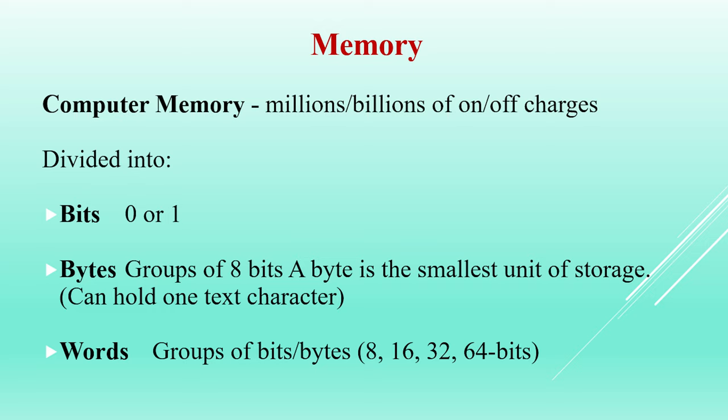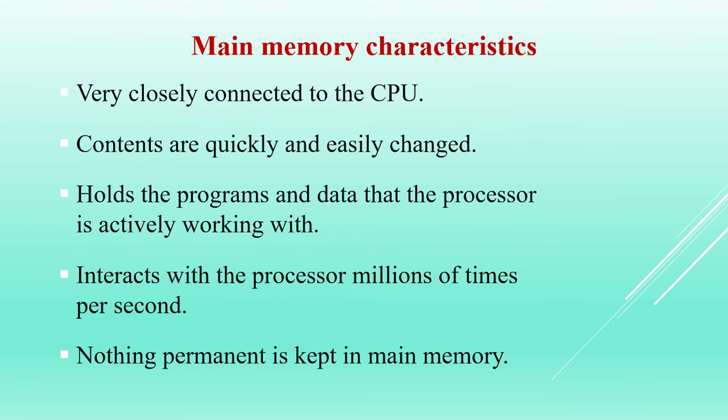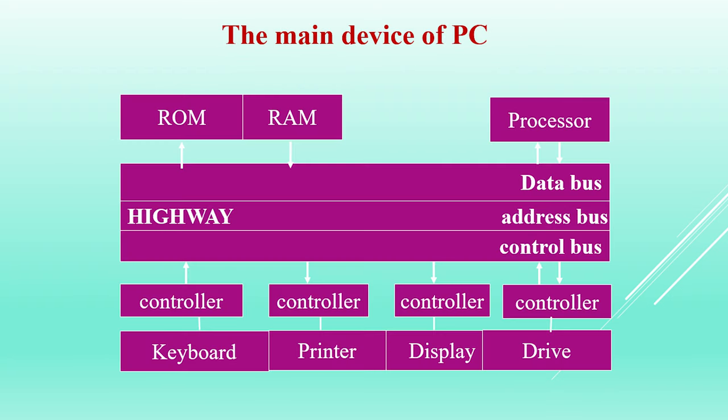RAM is located on the motherboard and is used for temporary storage of data during immediate processing. ROM — read-only memory — is used for permanent storage of data that does not require modification.